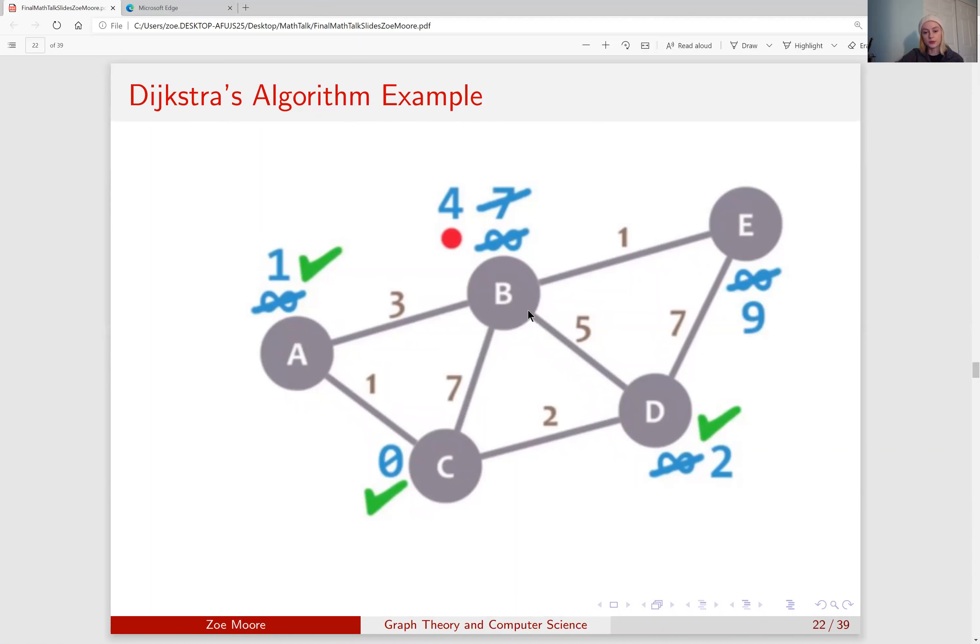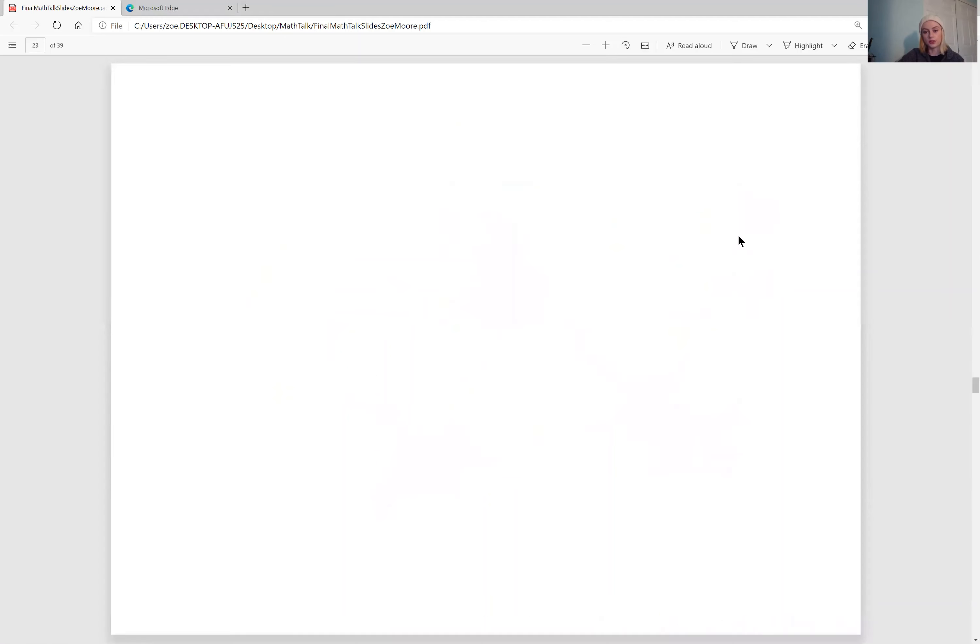B is connected to every node in the graph, but A, C, and D are complete, meaning that we only have to consider B to E. Since B has a label of 4 and the weight of the edge from B to E is 1, we know that B to E has a weight of 5 total, and we can change the label on E to 5 because 5 is smaller than 9.